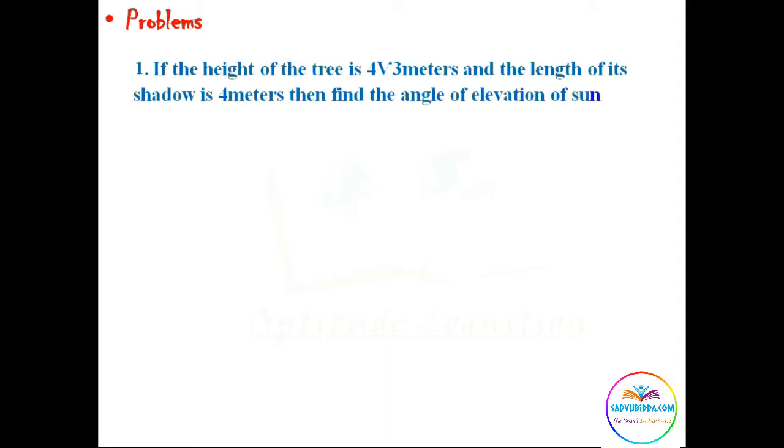Let us now solve some simple problems. In question one, given that if the height of the tree is four root three meters and the length of its shadow is four meters, then find the angle of elevation of sun. Let us consider a tree BC with a height four root three and its shadow four meters, let it be A.